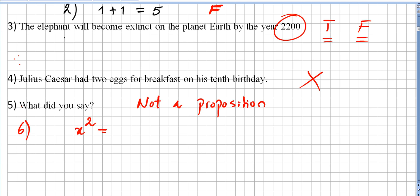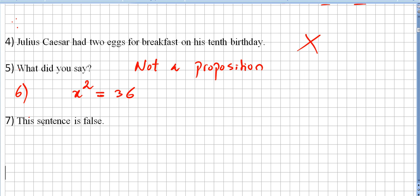Other examples would be x squared equals 36. This is a sentence, but this is not a proposition too. Now, the seventh example. This sentence is false. This is not a proposition too. And this one is very close to a very famous problem in logic, but I'm not going to get into that now. So the fifth example is not a proposition, because what did you say? This question has a sentence and it has not a truth value. I cannot say this is true or this is false.